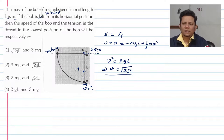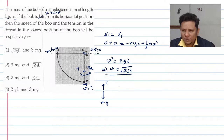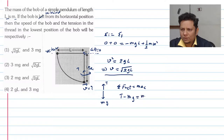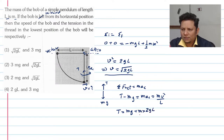अब इस जगह पर tension की बात करेंगे। Particle का FBD बनाएं: नीचे force mg, ऊपर tension T। Particle circular motion कर रहा है। Which means T = mg + mv²/L। v की value already आ चुकी है, so T = m × 2gl / l = 2mg। Therefore tension = mg + 2mg = 3mg।